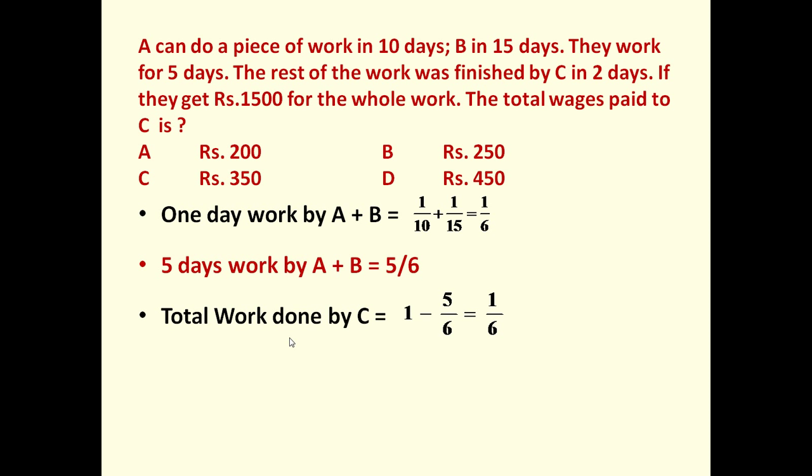So total work done by C is 1 by 6. If work done by C is 1 by 6, C will get the total remuneration equal to 1 by 6 into 1500. Wages are directly proportional to the work done.